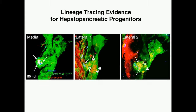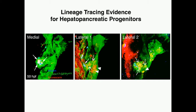The medial cell and lateral one cells mainly give rise to pancreatic progenitor cells. But the lateral two cells can give rise to both liver and pancreatic cells. This was the first in vivo genetic evidence that there is a single bipotential progenitor cell that can give rise to both liver and pancreas.